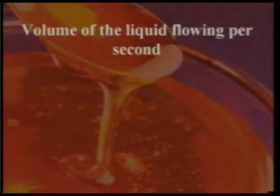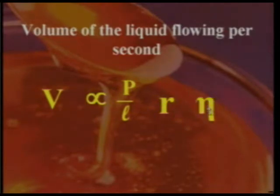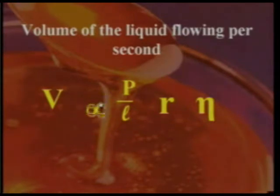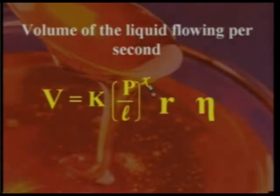The volume of liquid flowing per second V is directly proportional to the pressure gradient P by l. It is also directly proportional to the radius of the tube and varies with the coefficient of viscosity. We can rewrite this as V equal to some constant K into P by l, r, and eta.